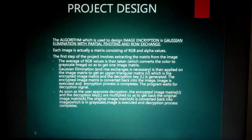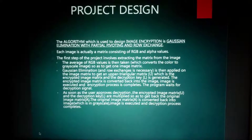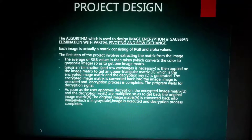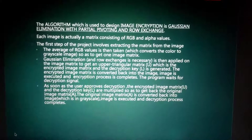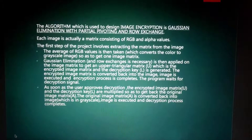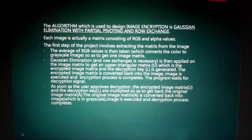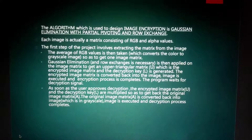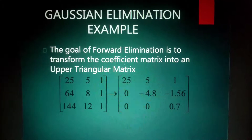The algorithm used in this image encryption project is Gaussian elimination with partial pivoting and row exchange. The steps are: first, the average of the RGB values is taken to convert the image to grayscale. The encrypted image is then executed and the encryption process completes. The program then waits for the decryption segment. As soon as the user approves, the encrypted image matrix and the decryption key are multiplied to get back the original image, and the decryption process completes.